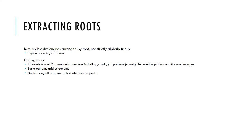Now, the best dictionaries for Arabic — the ones that are really the most useful — are arranged by root. That is, they're not just arranged by finding one word exactly how it's written on the page and looking it up alphabetically, but instead you find the root of that word and can find all words from that same root on the same couple of pages.